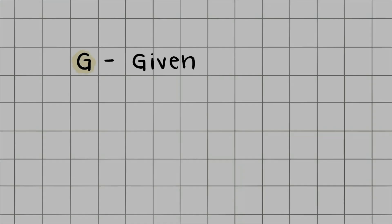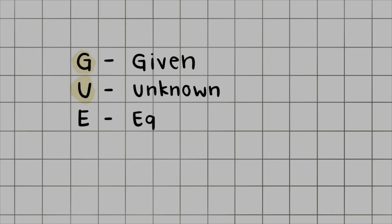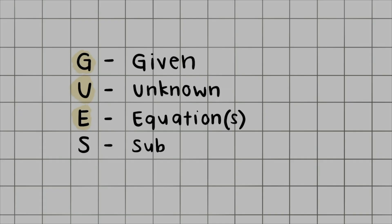Each letter of GUESS stands for something to process as you tackle a word problem, whether it's physics, chemistry, or even in your math class. The G stands for Given — what are you given in the problem already? What information do you already know? The U stands for Unknown — what are you trying to solve for? It's usually the last sentence in the question. The E stands for Equation. Based off of the givens and your unknown, which equation have you learned is going to best serve you in solving for the unknown? The S stands for Substitute, and you'll know that you chose the right equation because when you substitute all of your givens into the equation, the only variable left should be your unknown. And finally, the last S stands for Solve — find the solution.